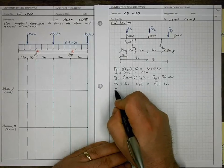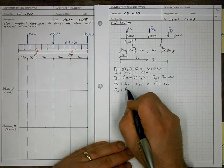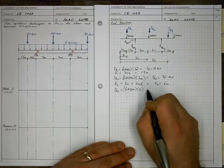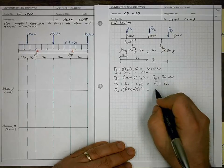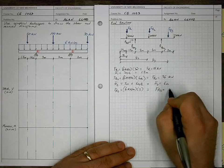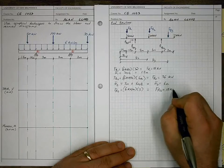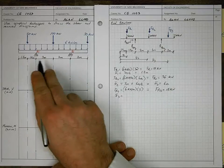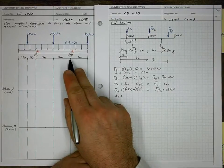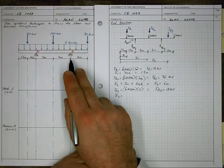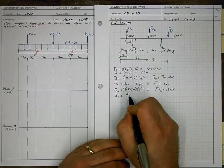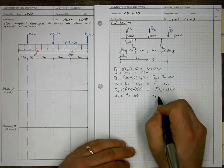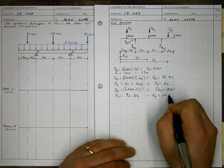FR3 is equal to 6 kN per meter multiplied by the width over which it's applied between B and the end, giving FR3 equal to 18 kN. And finally, X̄3 is equal to 9 meters plus half the distance between B and the end, so 9 plus 3 over 2, which gives X̄3 equal to 10.5 meters.